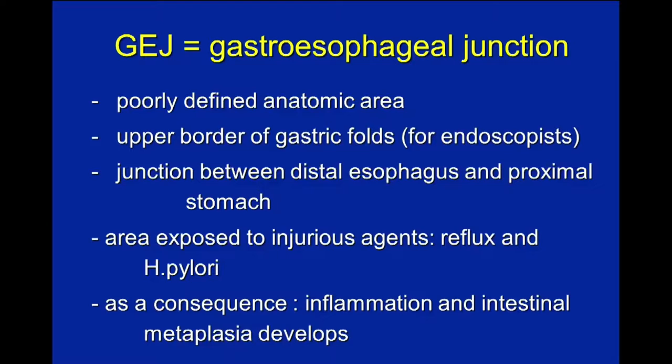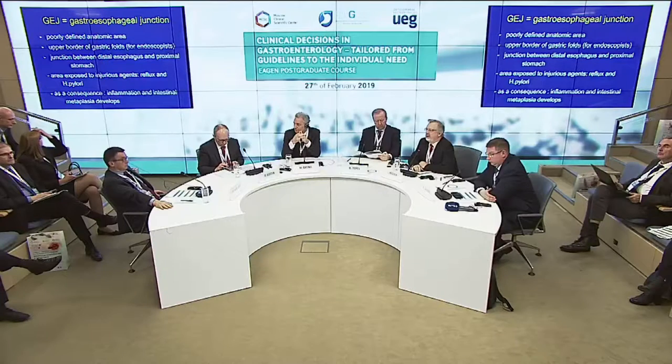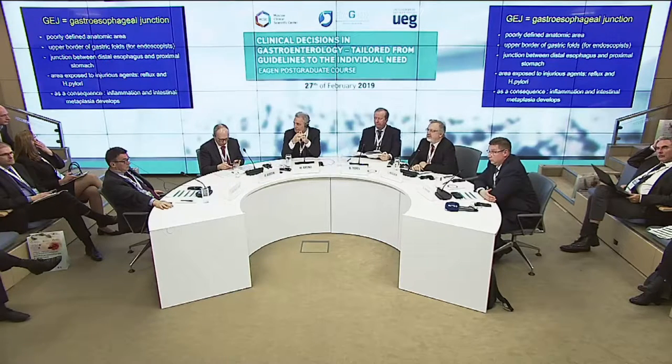This area is special for many reasons, particularly because it is exposed to injurious agents — especially reflux from the stomach — and also to Helicobacter pylori infection, which is usually present in the stomach. As a consequence, inflammation is frequently present in this area, and as a result of longstanding inflammation, intestinal metaplasia can develop.